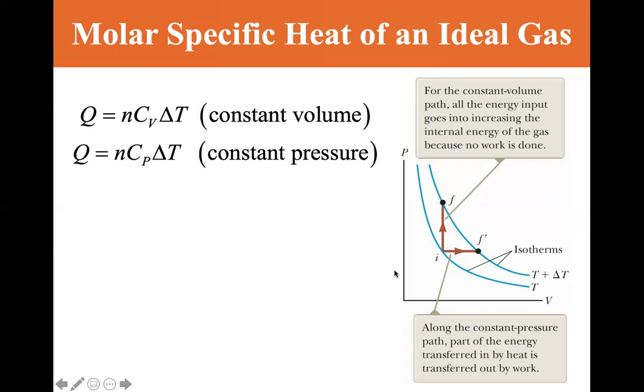So we have two different molar specific heats: the molar specific heat at constant volume, this CV, Q is equal to nCV delta T, where n is the number of moles. That's constant volume, and Q equals nCp delta T is constant pressure. So CV describes this path, and CP delta T describes this path.